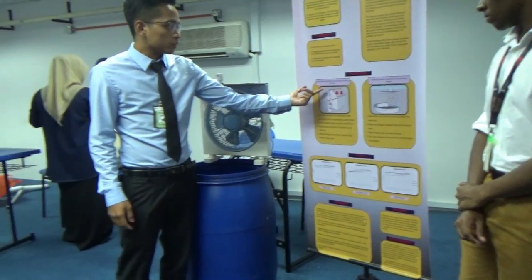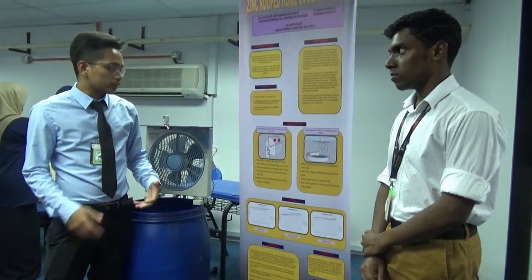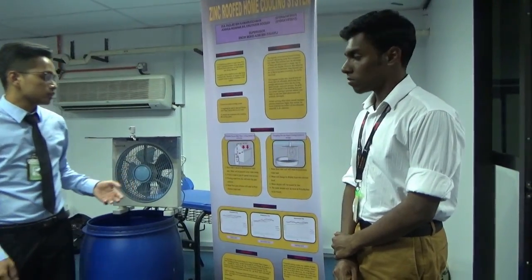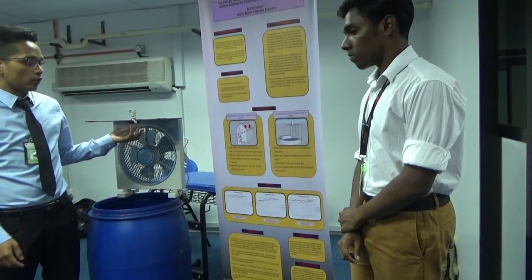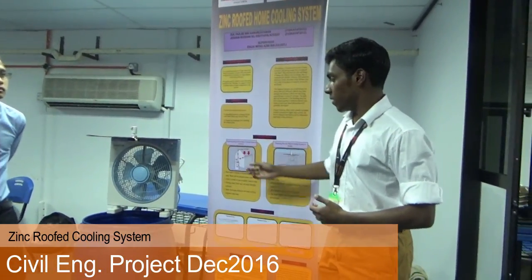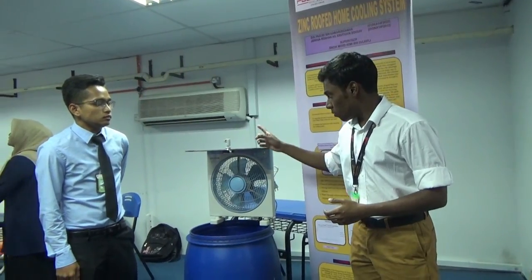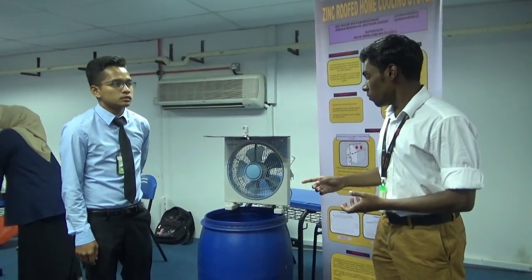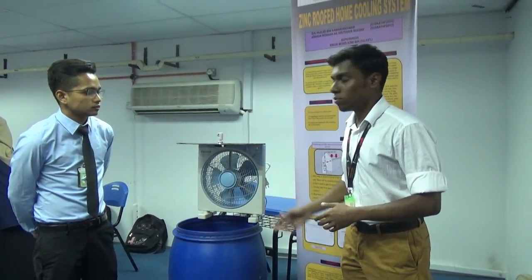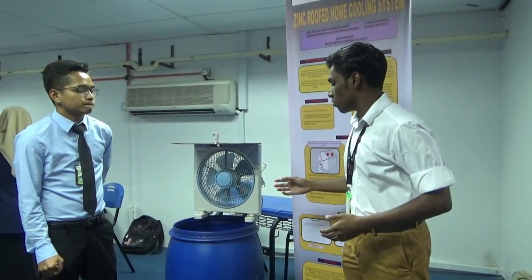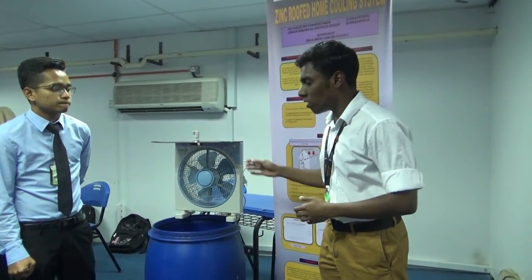Water flows from the top into the pipe collector. Before the water enters the water tank, it passes through the rain shower gate. With the rain shower gate, it flows down over a larger surface area. A fan pulls the hot air away from the rain shower gate area. When the water is cooled, it goes to the tank.